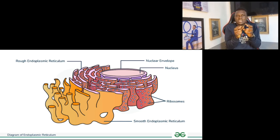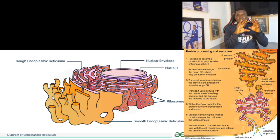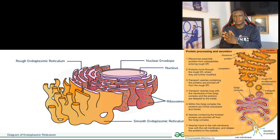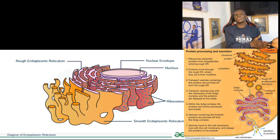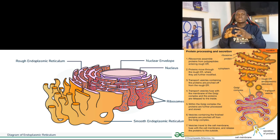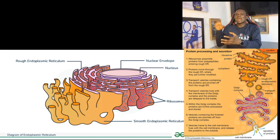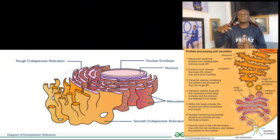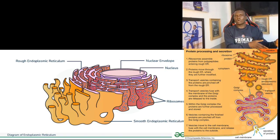The proteins produced at the rough endoplasmic reticulum are packaged in small structures called vesicles. These vesicles transport the proteins to the Golgi apparatus, or Golgi body. The Golgi body remodifies the protein, adding necessary materials to give it a 3D tertiary structure so that it can function properly. After modification, the protein is transported outside the cell for use. So: endoplasmic reticulum handles transport within the cell, while the Golgi apparatus handles transport outside the cell.